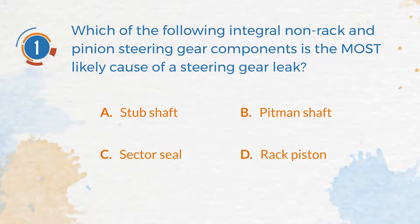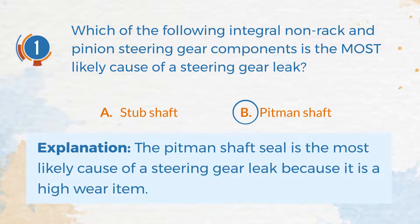The correct answer is B. Pitman Shaft. Explanation: The Pitman Shaft seal is the most likely cause of a steering gear leak because it is a high wear item.